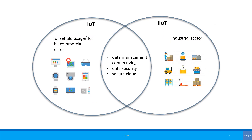Both IoT and IIoT are communication-based ecosystems, but IoT is intended exclusively for household usage in the commercial sector, while IIoT pertains to the industrial sector. They both have common concepts like data management, connectivity, data security, and a secure cloud.